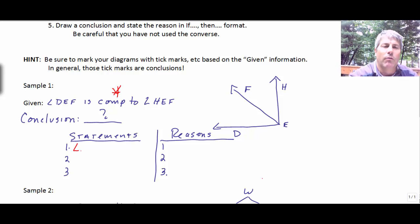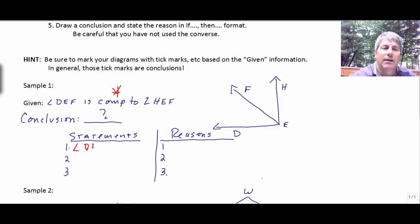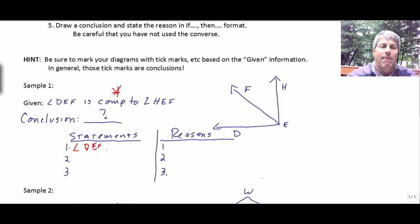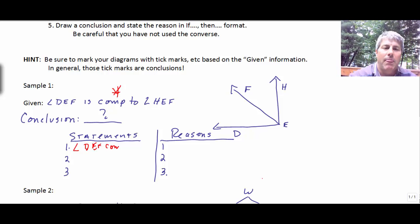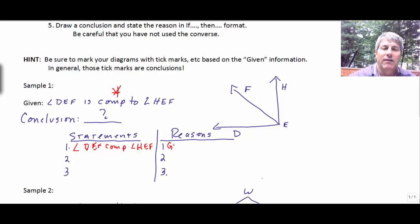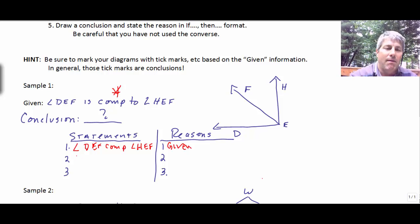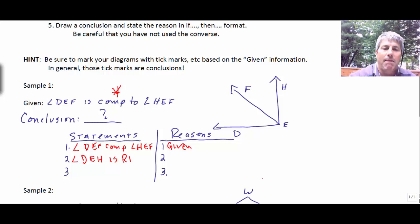So, we're going to write our given: angle DEF is complementary to angle HEF. And that is given. And then, we can say angle DEF is right. And our reason is, if two angles...